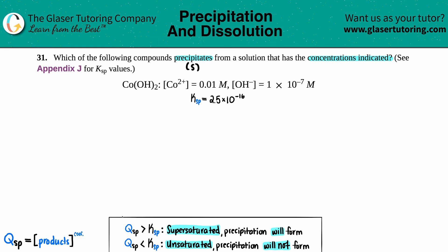To do that, we compare the Qsp value that we're going to get to the known Ksp theoretical value from the back of the book. The Ksp for Co(OH)2 is 2.5×10^-16.